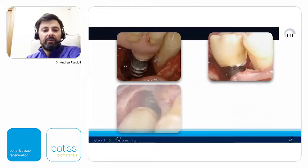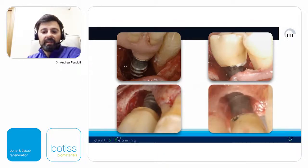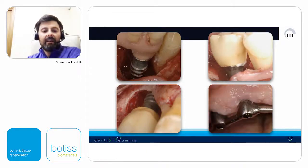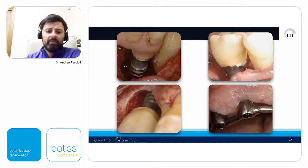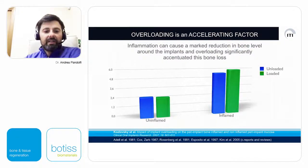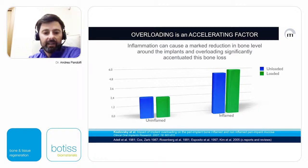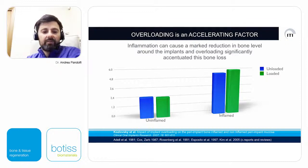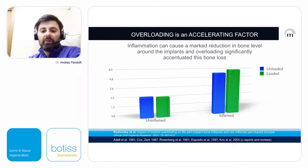Peri-implantitis is related to periodontal history and predisposition of the patient, presence of bacterial plaque, lack of adequate cleansing spaces, uncontrolled cementation, positioning of the prosthetic margin in depth, and apical prosthetic chipping or overload on prosthetic compression. Overloading is an accelerating factor — if there is inflammation, it can cause a marked reduction in bone level. In my opinion, overloading can also cause additional factors such as apical prosthetic chipping or screw loosening, which could aggravate peri-implant inflammation.